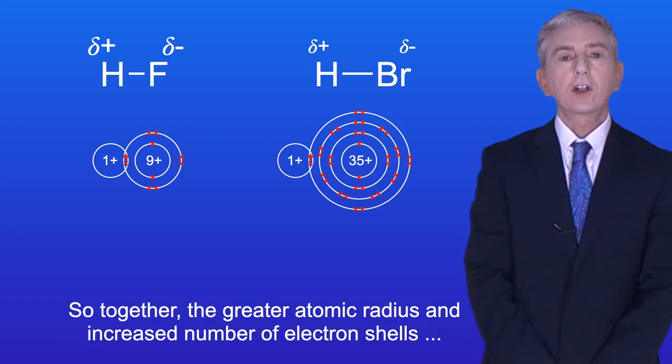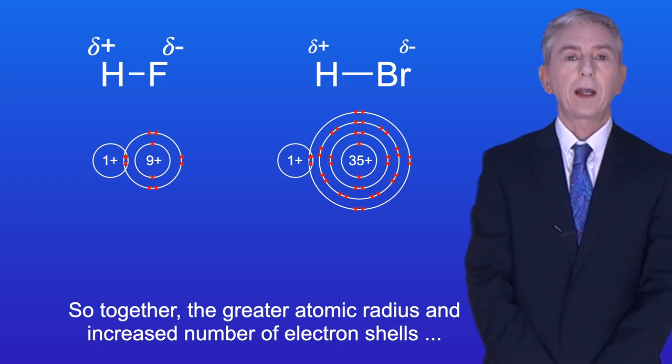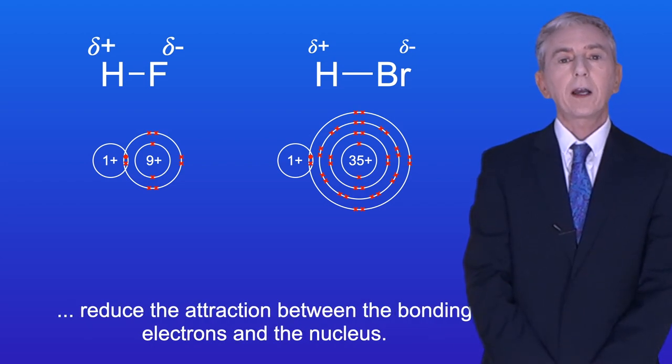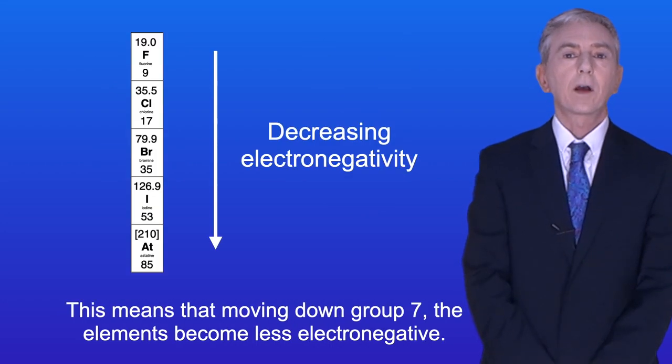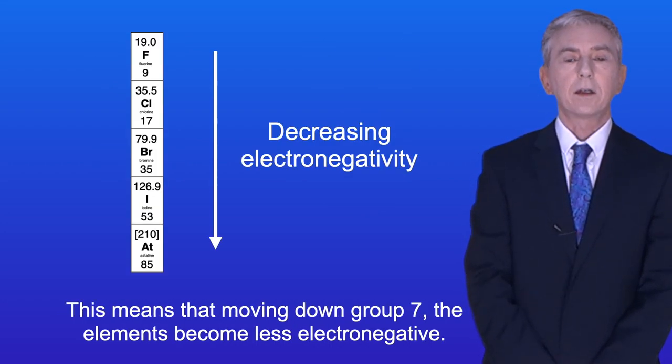So together, the greater atomic radius and increased number of electron shells reduce the attraction between the bonding electrons and the nucleus. And this means that moving down Group 7, the elements become less electronegative.